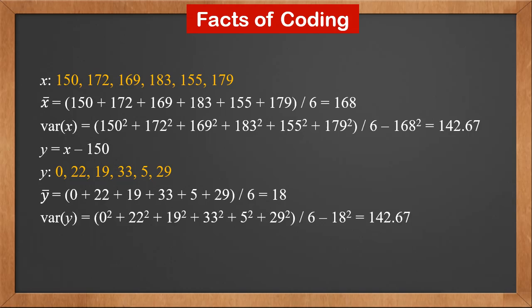Variance y is the sum of all y squares, divided by 6, minus the square of y bar. It is also 142.67. So as a general rule, if y is x minus a, then y bar is x bar minus a. And the variance remains the same.